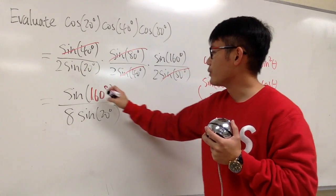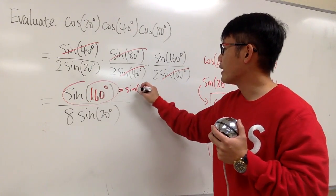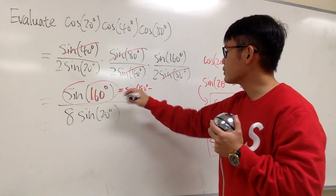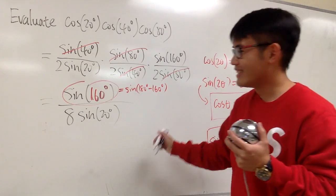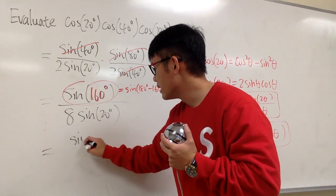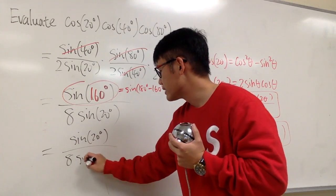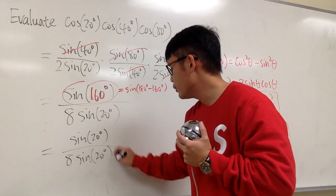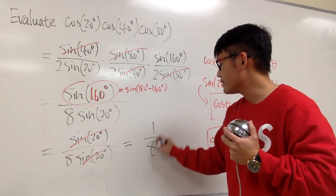And let me write this down. You know, this right here, it will be the same as sine of 180 degrees minus 160 degrees, which is 20 degrees. So, all together, on the top, it's sine of also 20 degrees over 8 sine of 20 degrees. Cancel out, of course. Final answer, 1 over 8.